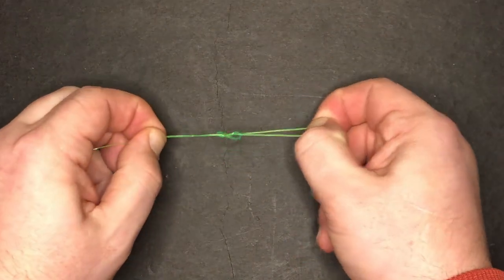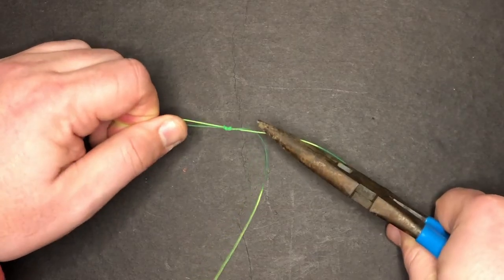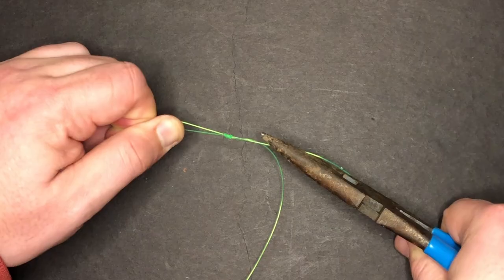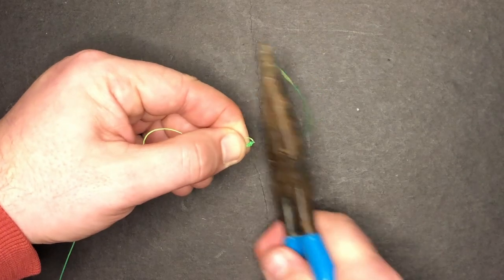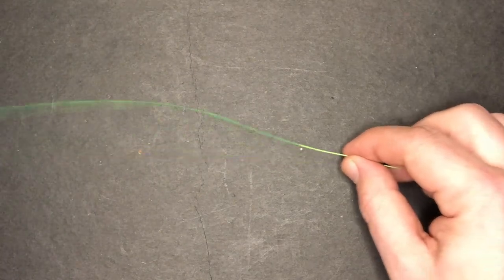Now as I pull this knot tight, I want to make sure that this loop is large enough it can wrap around my sinkers. Now I'm going to use my pliers to pull in the tag end to make sure it's good and snug. And after I trim the tag end, that is going to complete the surgeon's loop.